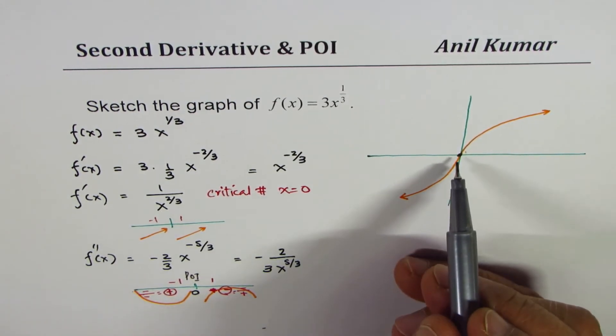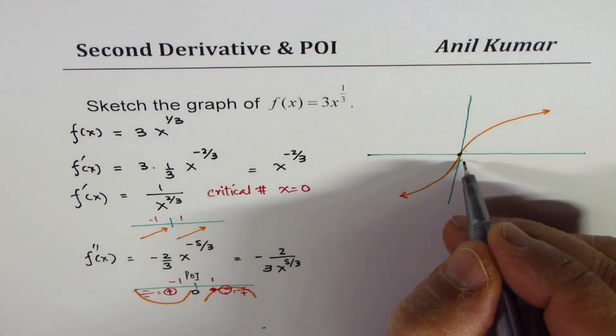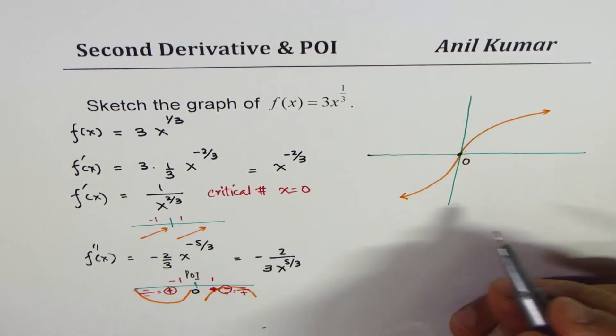So this is point of inflection, which you could see at this point. And the concavity, you can always check this concave up, as you can see here, at 0, and it's concave down on the other side.